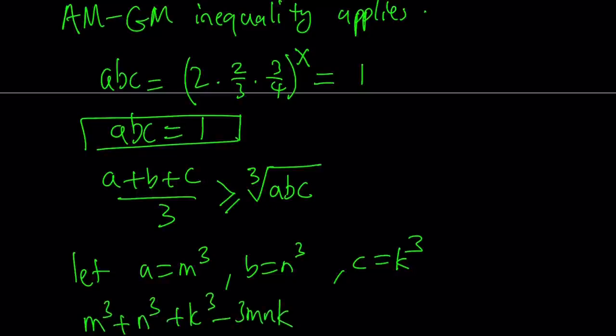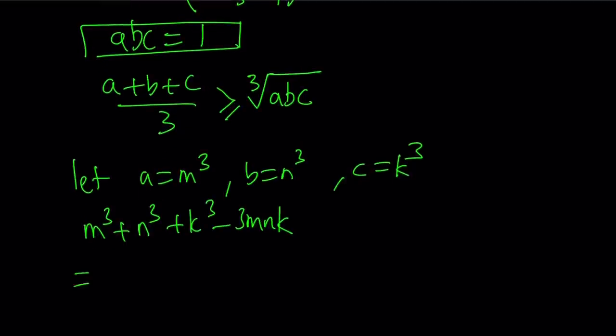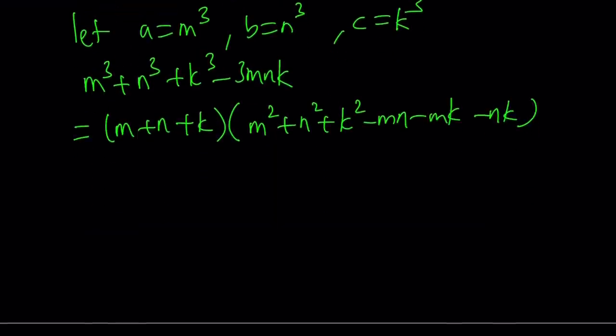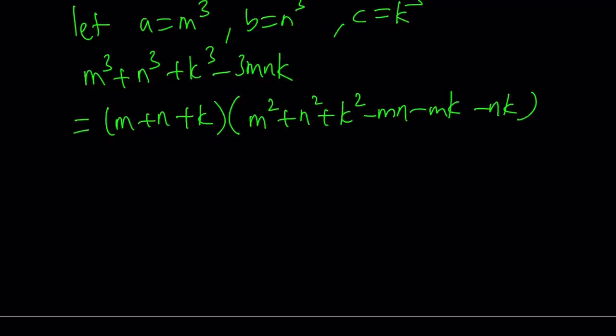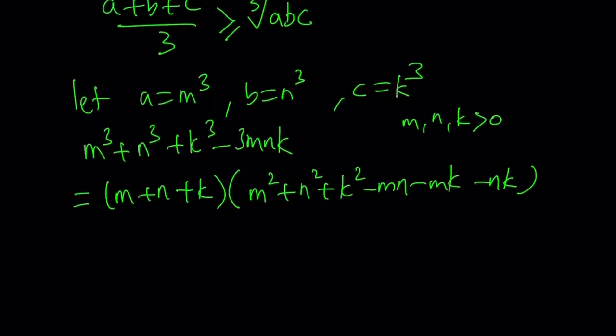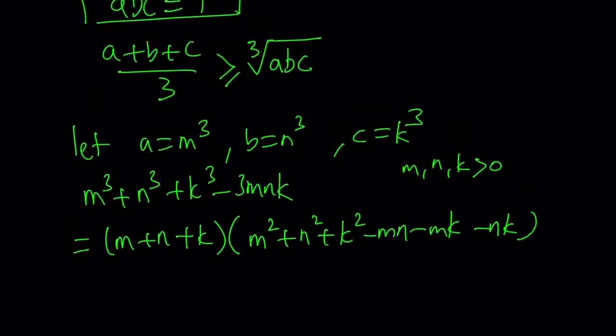If you've seen some other videos that I made, you'll probably remember that this polynomial is divisible by m plus n plus k. The other factor is m squared plus n squared plus k squared minus mn minus mk minus nk. Now I'm going to focus on the second expression here. Obviously, since a, b, c are all positive, m, n, k are also going to be positive because they're just the cube roots of these numbers.